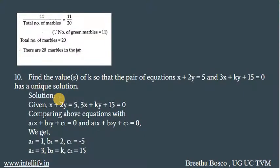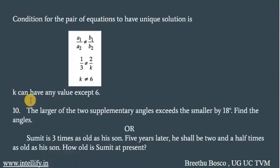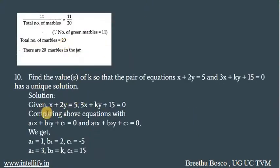Question number 10: find the value of K so that the pair of equations X + 2Y = 5 and 3X + KY + 15 = 0 has a unique solution. For unique solutions, A1/A2 should not be equal to B1/B2. Bringing the first equation to standard form: X + 2Y − 5 = 0, so A1 = 1, B1 = 2, C1 = −5. For the second equation, A2 = 3, B2 = K, and C2 = 15.